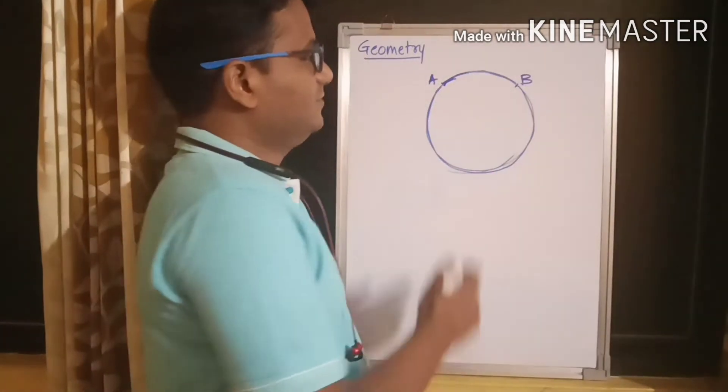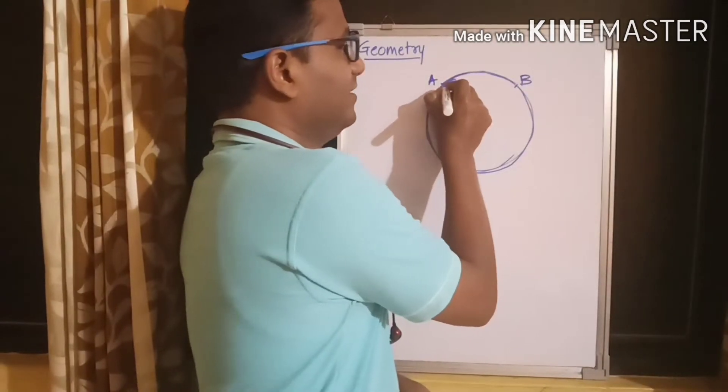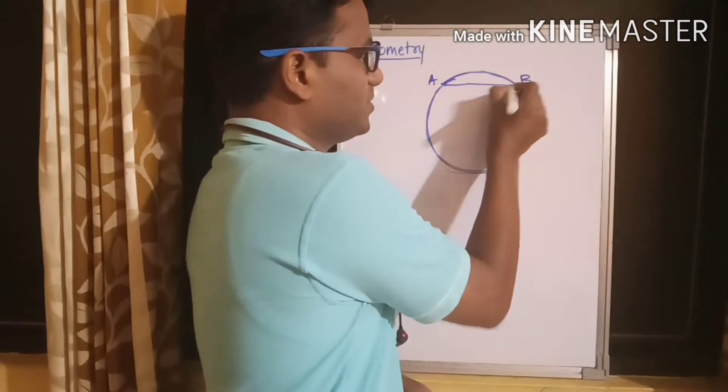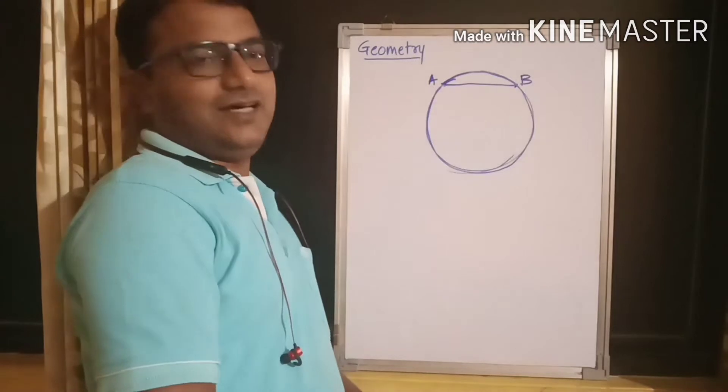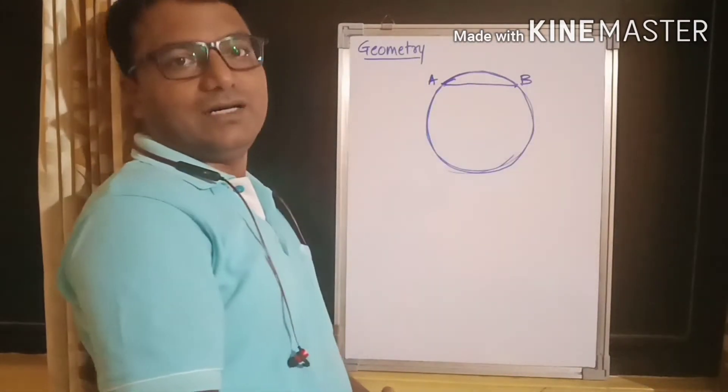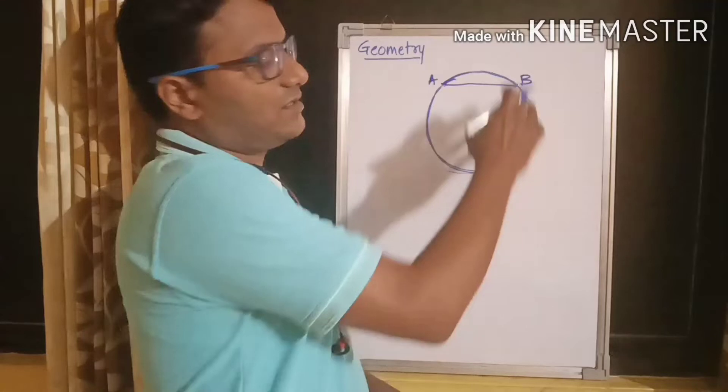Or he can walk around by the other side and reach Mr. B. Or he can jump in the well, he can swim to Mr. B. Now, as you see, there are three possible paths he can take to reach Mr. B.